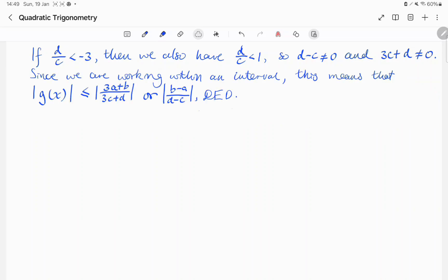Since we are working within an interval, this means that, in this interval, the magnitude of g of x is less than or equal to the magnitude of 3a plus b over 3c plus d, or the magnitude of b minus a over d minus c, as required.